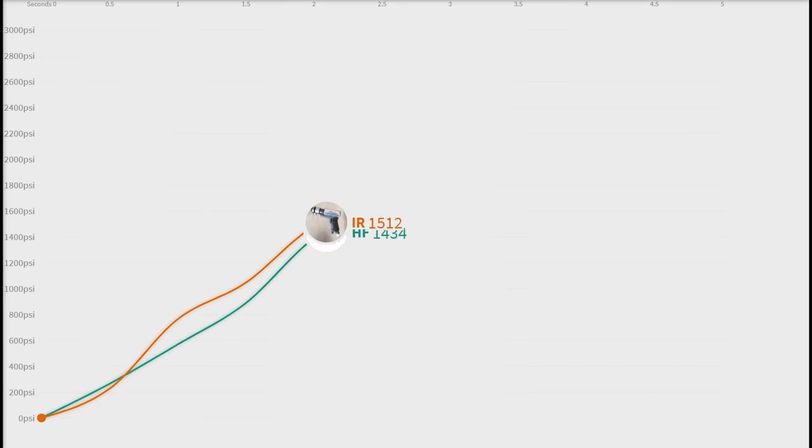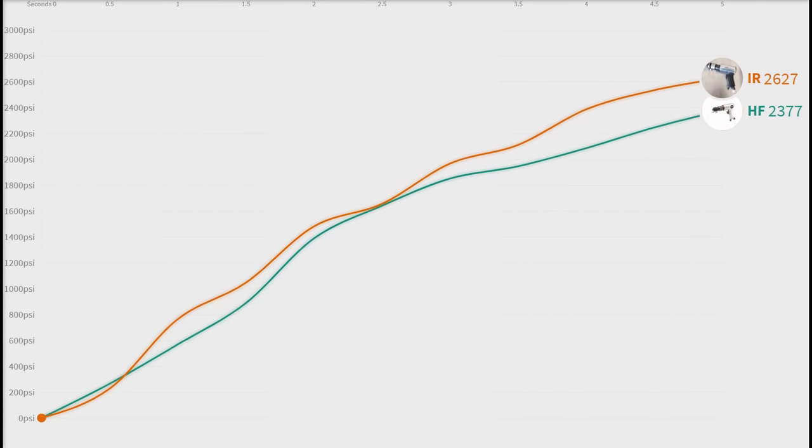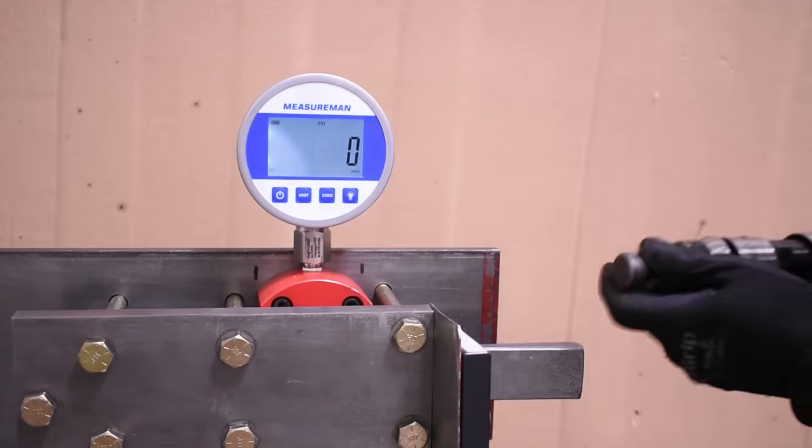On our next test, this is called minimum power. Same settings as max power but use just the trigger to try to control that power and minimize it. This measures how much you're able to trigger the tool.